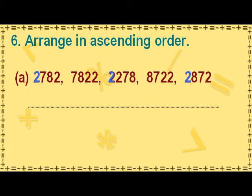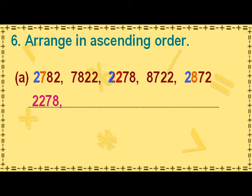Now look for the smallest digit in the hundreds place among the remaining two numbers, 2782 and 2872. The digit 7 in 2782 is smaller than the digit 8 in 2872. So the next two numbers in ascending order are 2782 and 2872.